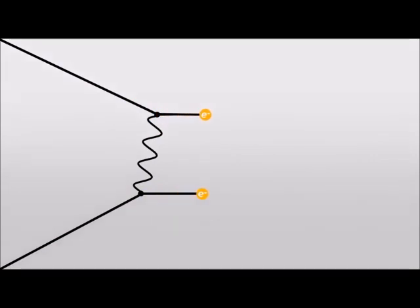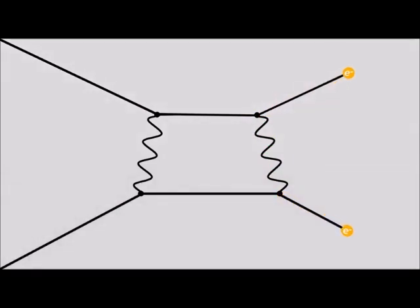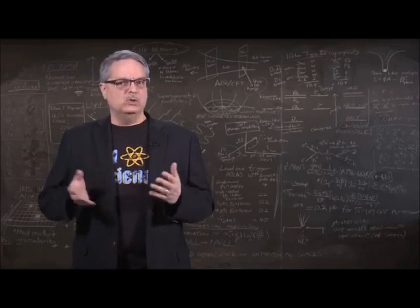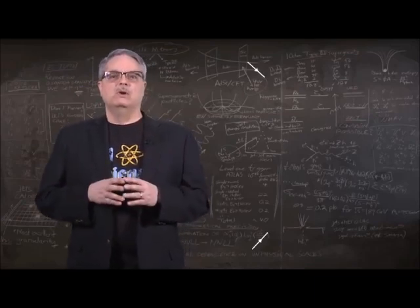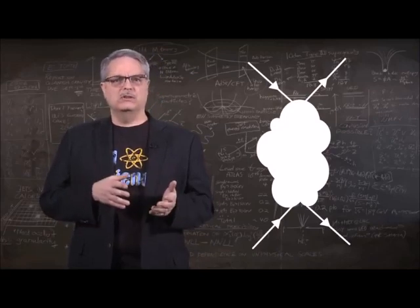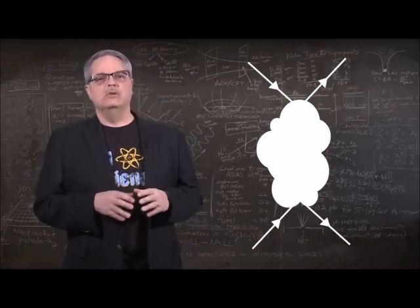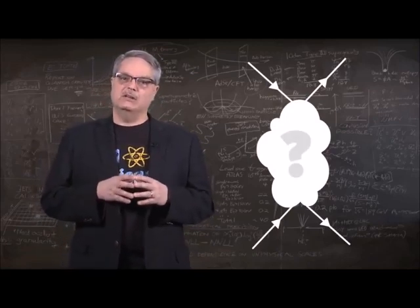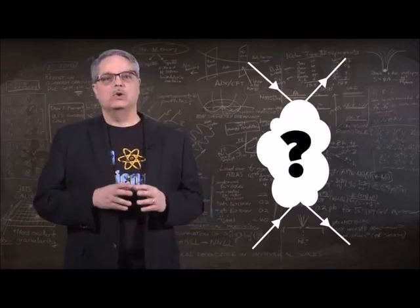As one electron emits a photon, it recoils, as does the electron that absorbs it. If multiple photons are emitted and absorbed, the outgoing electron trajectories will reflect the contribution of all emissions. Since we don't know in any specific scattering between two electrons what's going on, we can sort of draw it like this, with electrons coming towards one another and then leaving the interaction with an amorphous blob that indicates our ignorance of exactly what is going on in the collision.